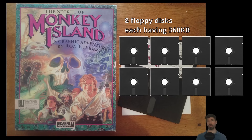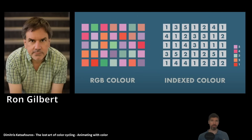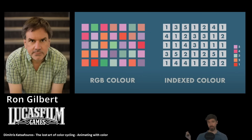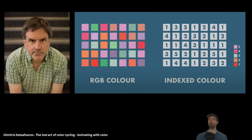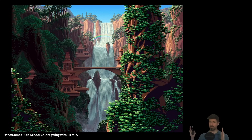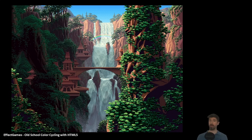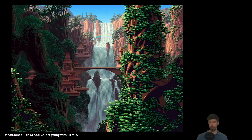So how did they solve the issue? Ron Gilbert and his team at LucasFilm Games — later known as LucasArts — came up with a genius workaround called color cycling. Instead of storing separate frames for animation, they just shifted the colors of the pixels in a loop. The result: the illusion of movement without eating up more data. A problem solved not through brute force but through ingenuity.